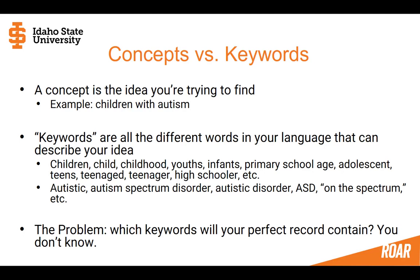Autism is the same thing. There aren't quite as many keywords, but 'autistic' is another way to say that, or casually you might say 'on the spectrum' or 'ASD.' So what keywords will a great record contain? They're out there and we just don't know exactly what they say, which is the problem for searching when you're putting words into a computer. You have to broaden your conception of what words are actually relevant to your search.